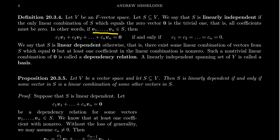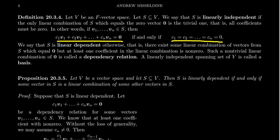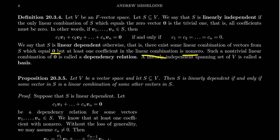So linear combinations are only defined for a finite number of vectors. If you take any vectors V1 through Vn, with scalars C1, C2 up to Cn from our field, then S is linearly independent if the only way this linear combination could equal zero is if each of the coefficients themselves is equal to zero.